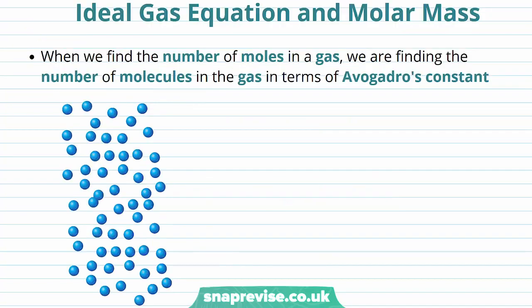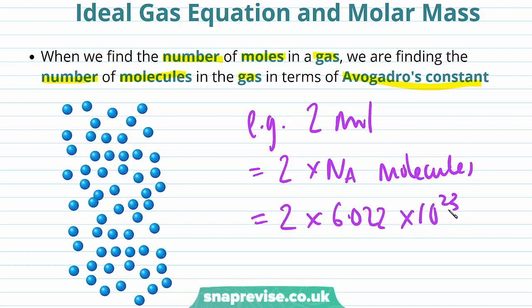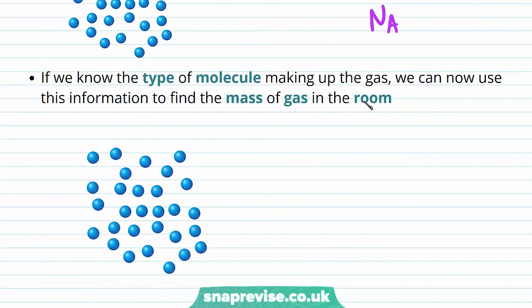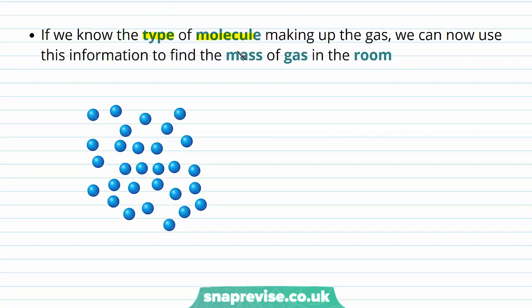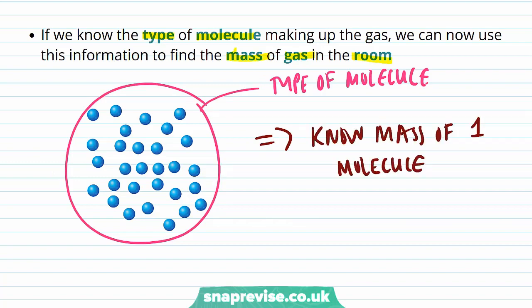Now we'll look at how we can use the ideal gas equation and molar mass in calculations. When we find the number of moles in a gas, we're finding the number of molecules in terms of Avogadro's constant. For example, two moles of a substance means 2 times Avogadro's constant molecules — that's 2 × 6.022 × 10²³ molecules. If we know the type of molecule making up the gas, we can use this to find the total mass of the gas.